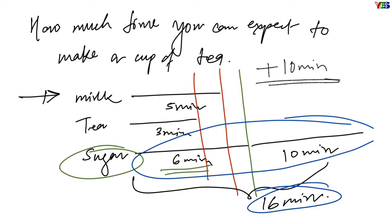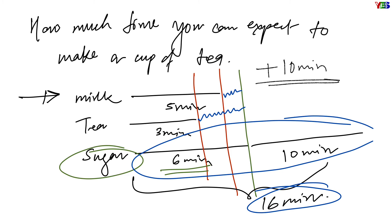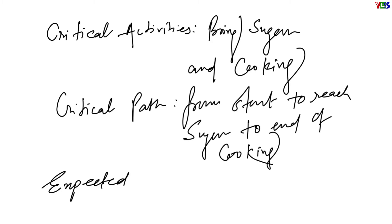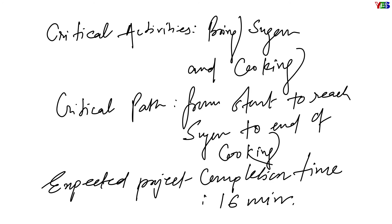We can make some observations. The friend who goes for milk can delay his activity by 1 minute, and the friend who goes for tea can delay his activity by 3 minutes, and you can still complete the project on time in 16 minutes. But the friend who goes for sugar — if he delays his activity by any amount of time — you will not be able to complete the project on time. Also, you cannot delay the cooking activity. So here, bringing sugar and cooking are the 2 critical activities, and the path from beginning sugar to end of cooking is called the critical path.